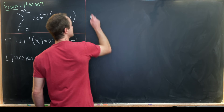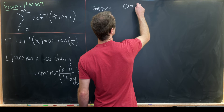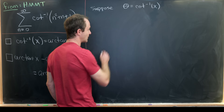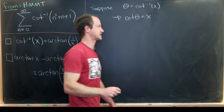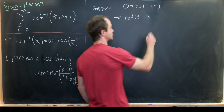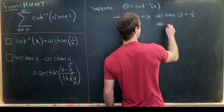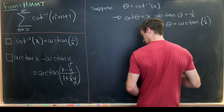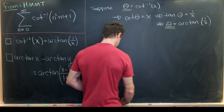Let's do the first one. Suppose theta equals the inverse cotangent of x. Using the inverse function relationship, that means the cotangent of theta equals x. But by the definition of cotangent as one over tangent, the tangent of theta is one over x, which means theta equals arctan of one over x. Gluing these two equations together gives us our result: arccot(x) = arctan(1/x).